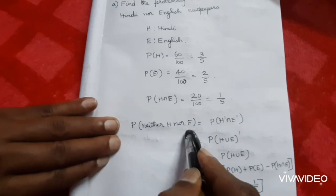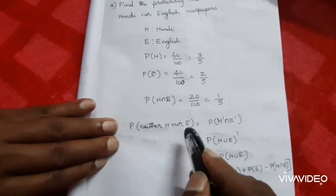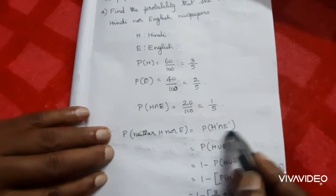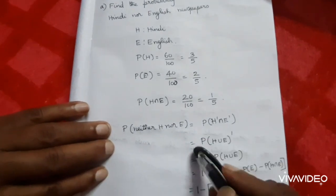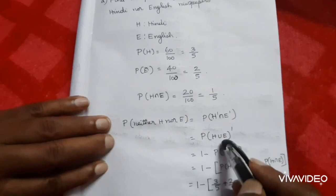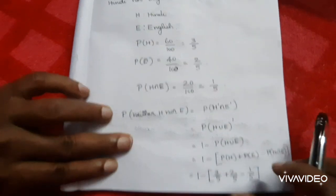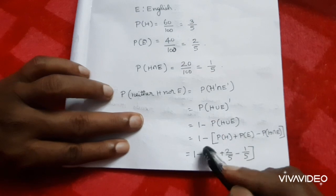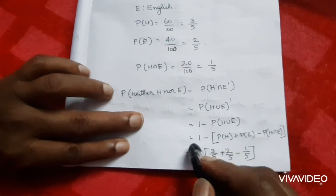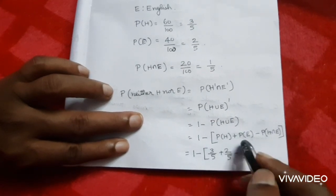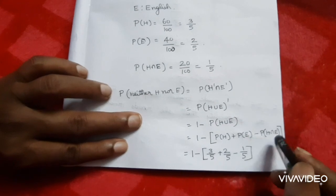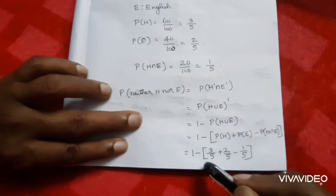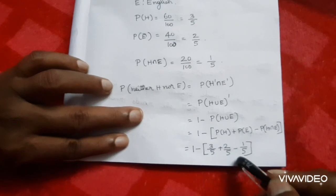Find the probability of neither H nor E, that is P(H' intersection E'). H' intersection E' equals P(H union E) whole dash, which equals 1 minus P(H union E). Using the formula: 1 minus [P(H) plus P(E) minus P(H intersection E)]. Substitute: 1 minus [3/5 plus 2/5 minus 1/5].